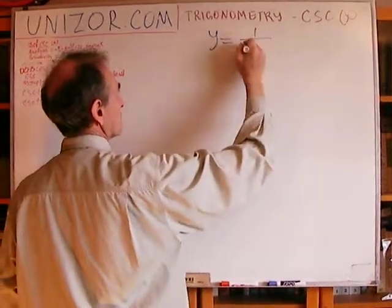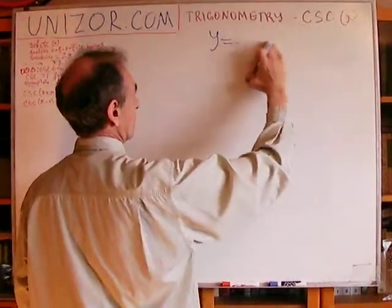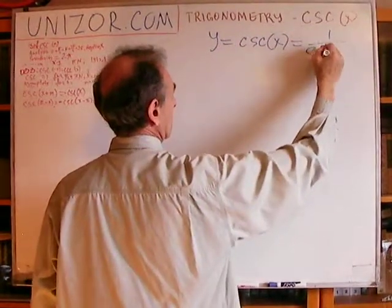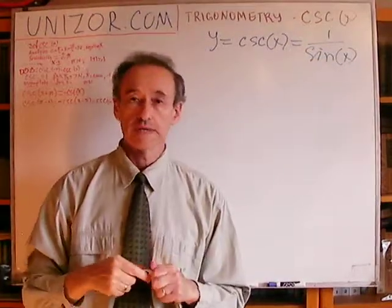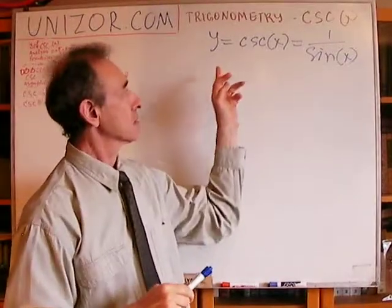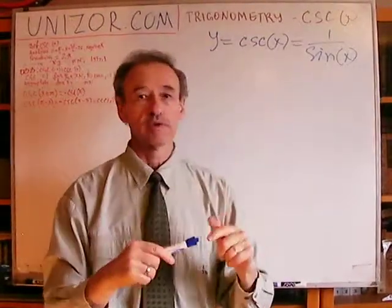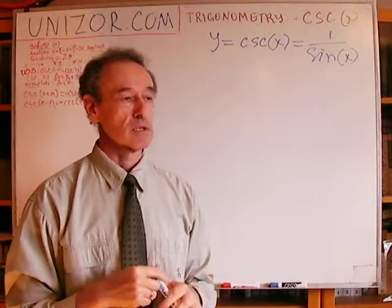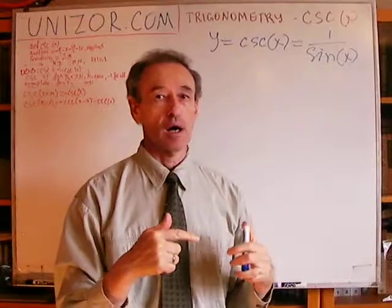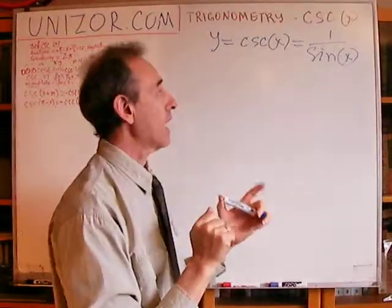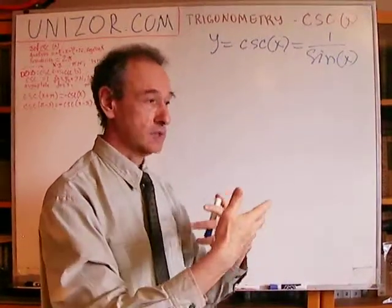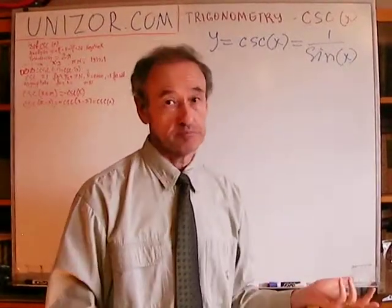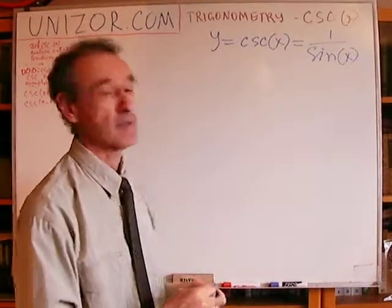I will use graphs and the definition of a cosecant. And the definition is 1 over sine. So you remember, secant is 1 over cosine, and cosecant is 1 over sine. Instead of analyzing this particular function as 1 over ordinate of a point in a unit circle, I will just start from the graph of sine and divide 1 by this particular graph.